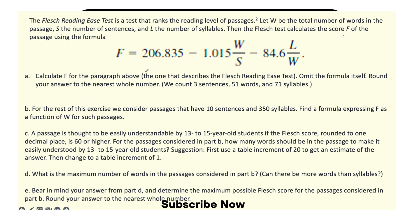Calculate F for the paragraph above, the one that describes the Flesch Reading Ease Test. Omit the formula itself. Round your answer to the nearest whole number. So it says we count three sentences, 51 words, and 71 syllables.